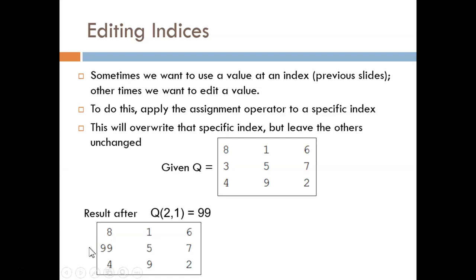The next example follows the same pattern. I identify the index on the left and declare the new value on the right. Then only that one index gets overwritten. It is important to keep in mind that the memory of the original Q matrix is lost. Only the latest version of Q is stored in the workspace.